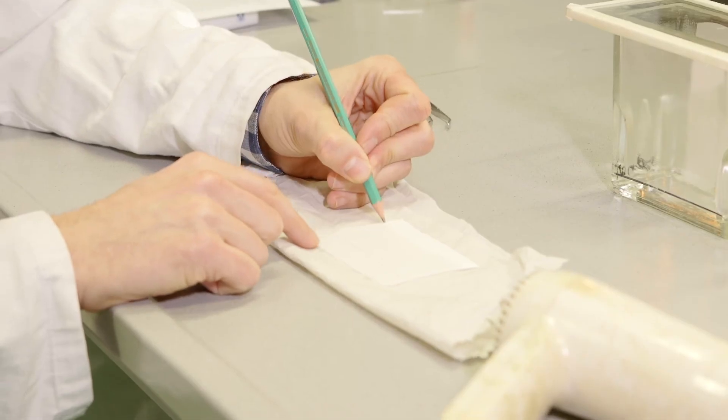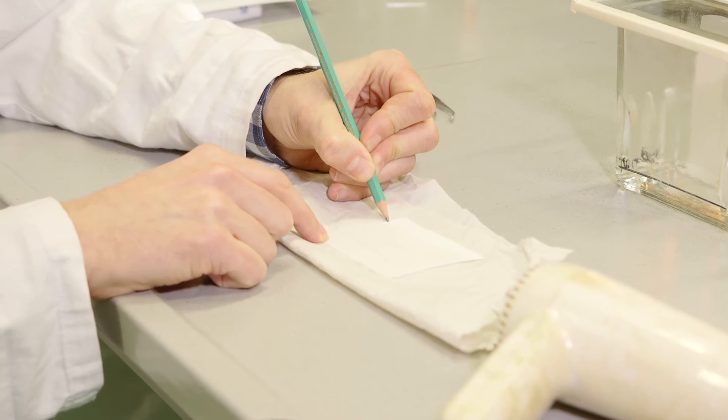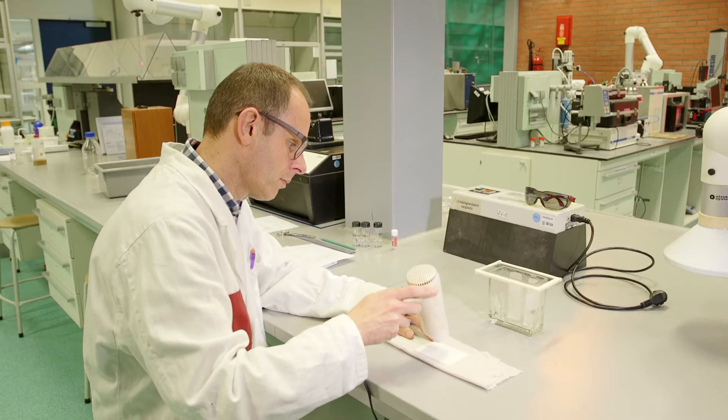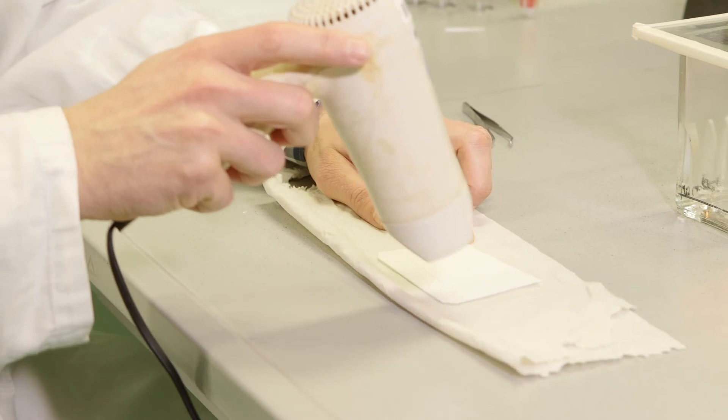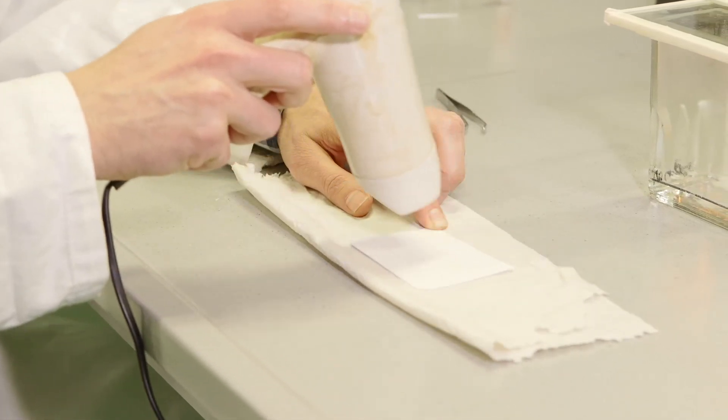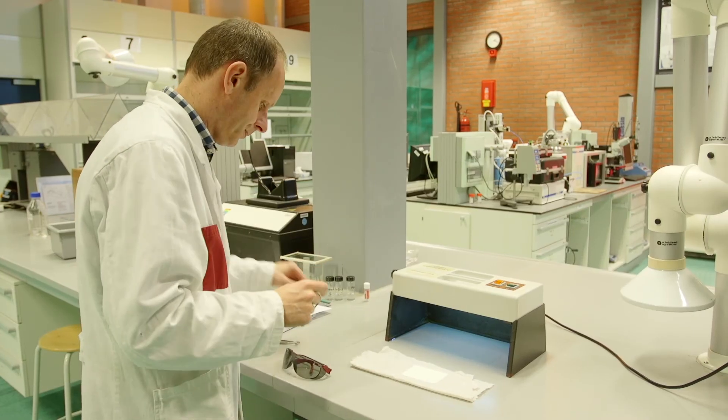The front of the solvent line is immediately marked with a pencil. This is important in order to determine the RF value. The plate must be dried. You can do this in the air or with a hairdryer.